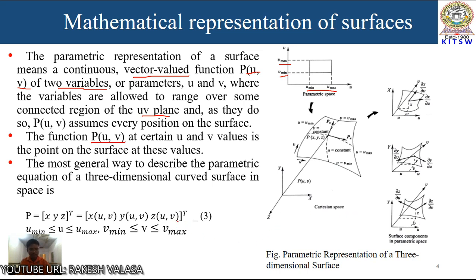This equation gives the coordinates of a point on the surface as the components of its position vector. It uniquely maps the parametric space, that is the u and v values, to the Cartesian space x, y, z. The parametric variables u and v are constrained to intervals bounded by minimum and maximum values. In most surfaces, this interval lies between 0 and 1, with minimum value 0 and maximum value 1 for both u and v.